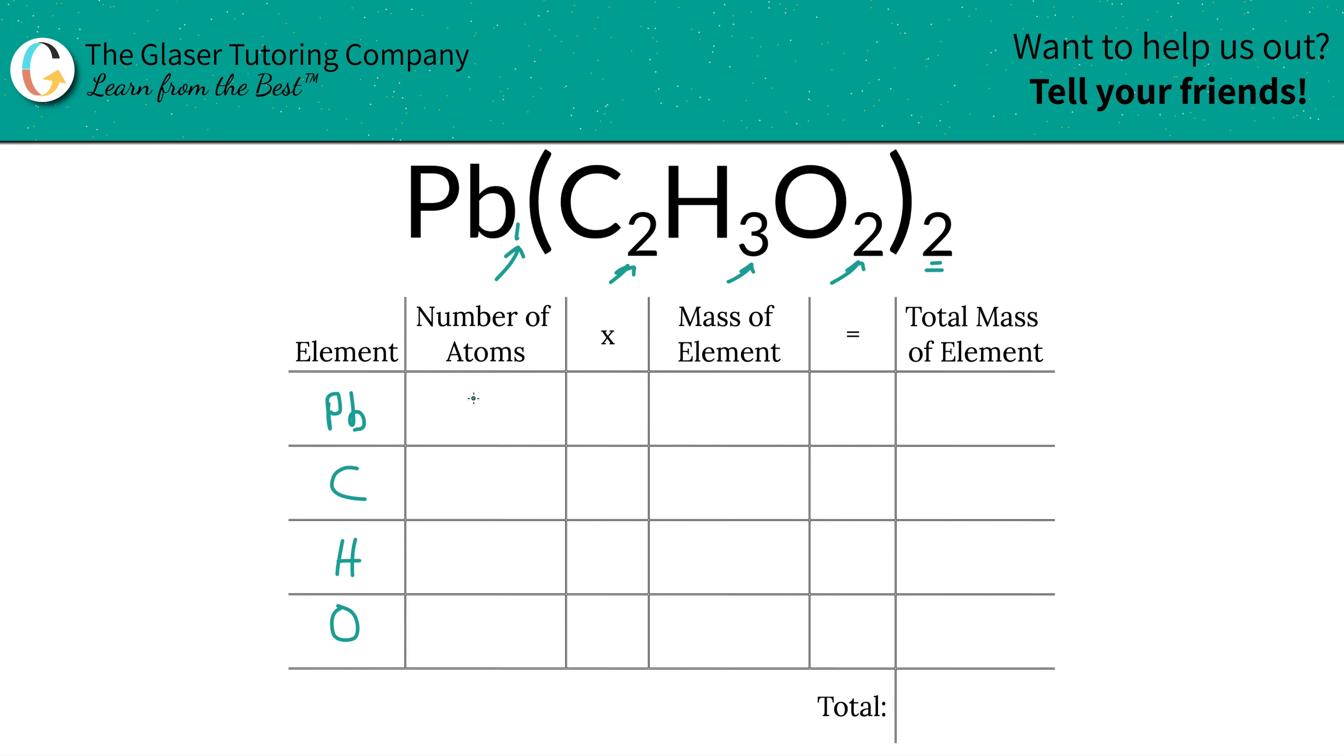So there's only one lead in the compound, that's because that's what its subscript is. And there is no parenthesis outside of it which to multiply by.